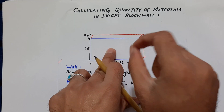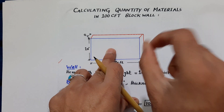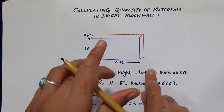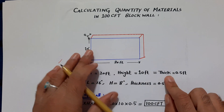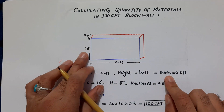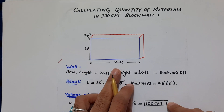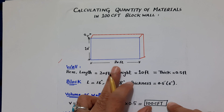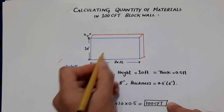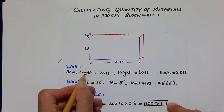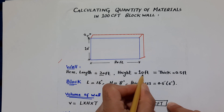We will also find how much mortar volume is required and how many cement bags are needed. If this video is helpful, please like and subscribe for more civil engineering updates. First of all, to find the quantity of cement blocks we need to find the volume of the wall. The length of this wall is 20 feet and the height is 10 feet.